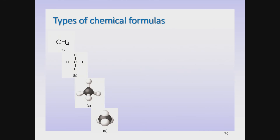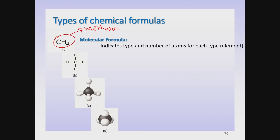Here what I want to do is talk about all the different ways that we can represent the molecule methane. This molecule CH4 is methane, which is found in natural gas. This formula is a molecular formula, and it represents the actual number of atoms of each element found in one molecule.